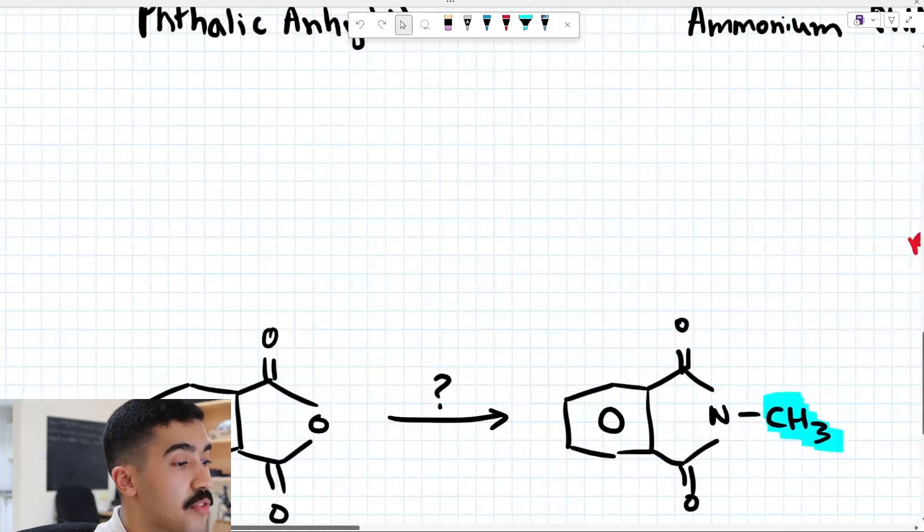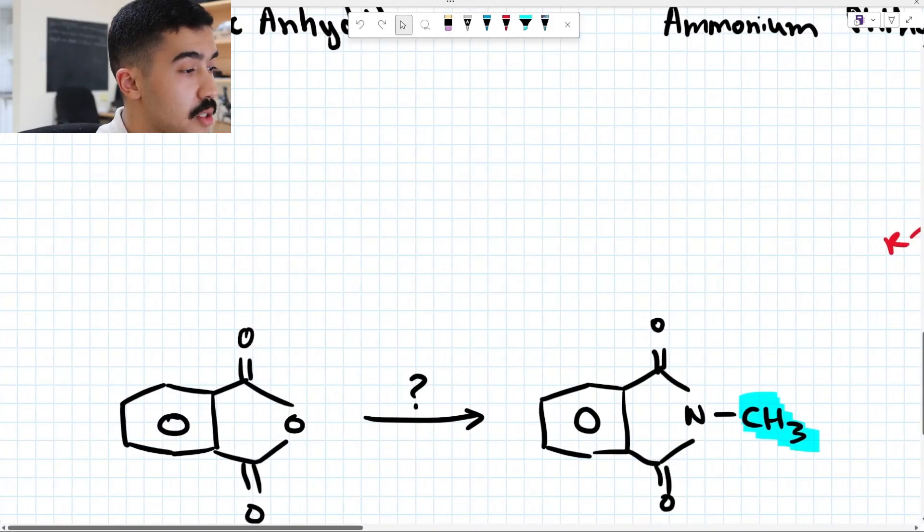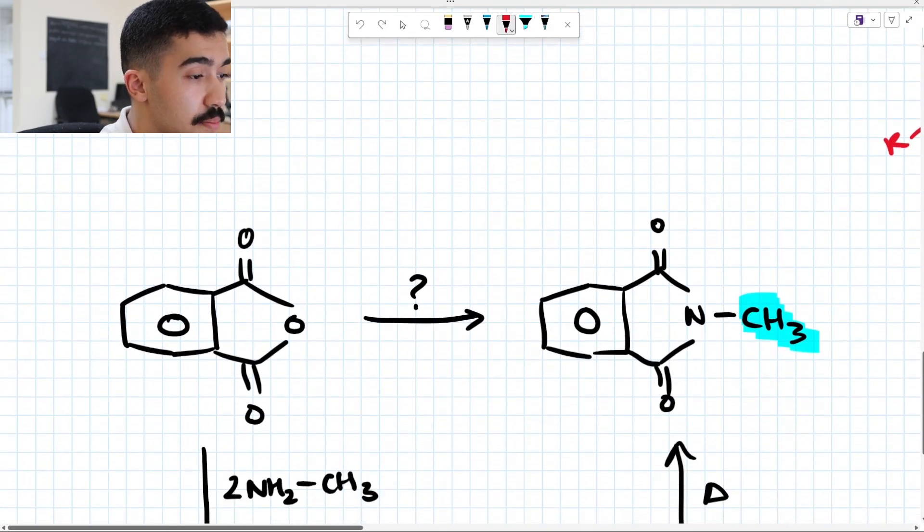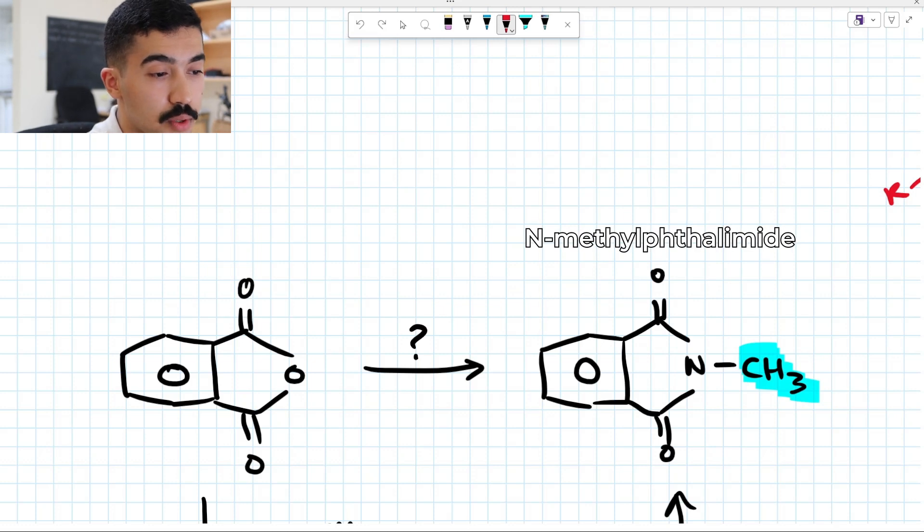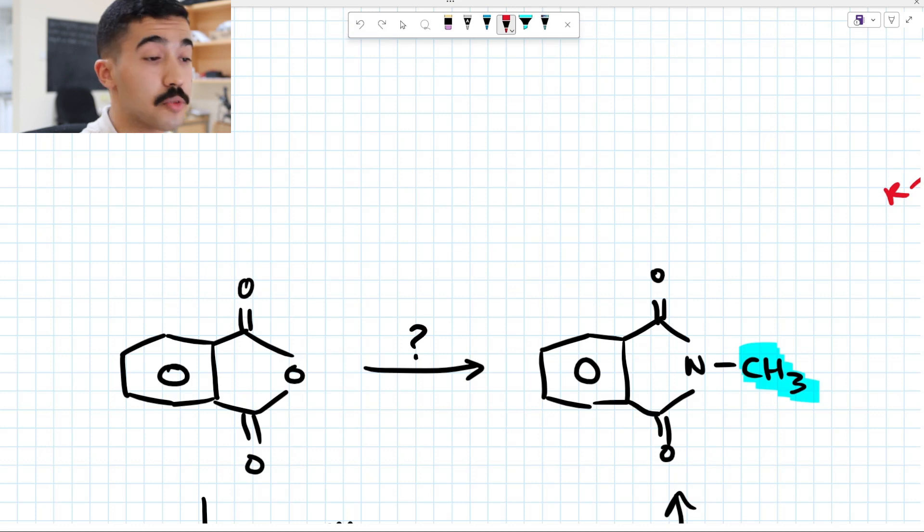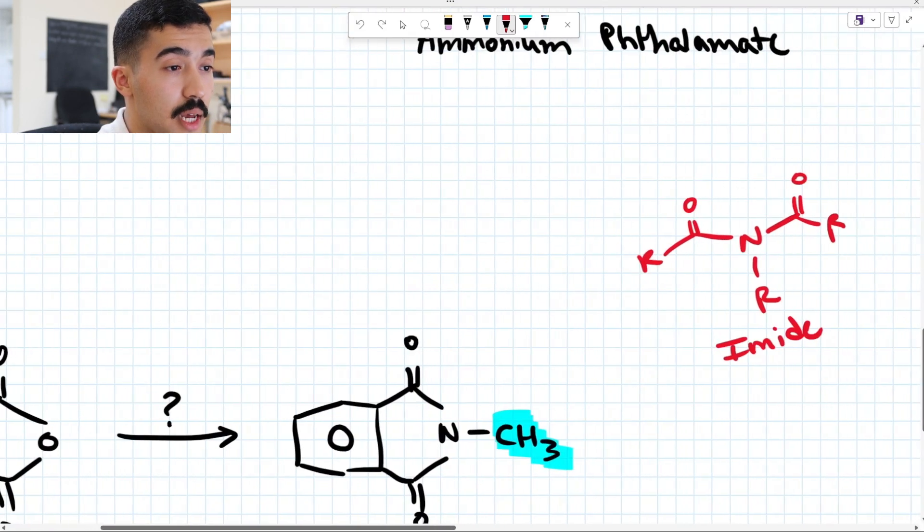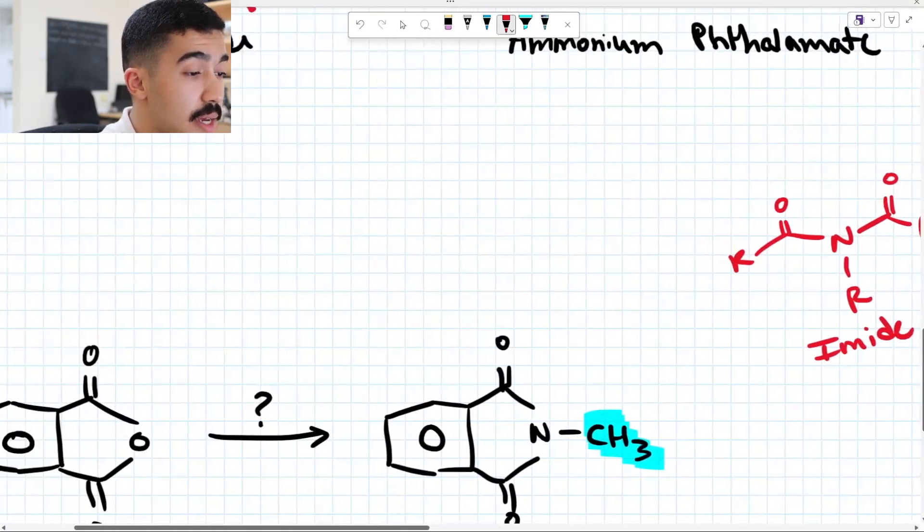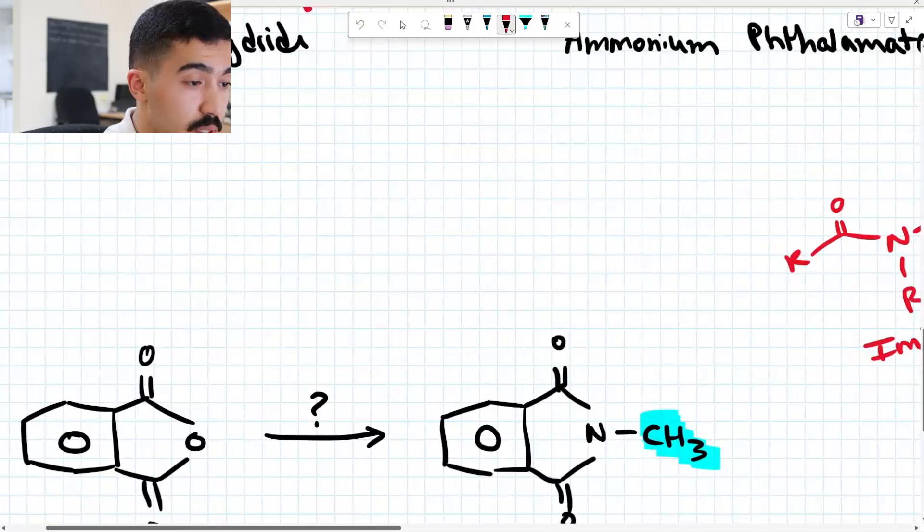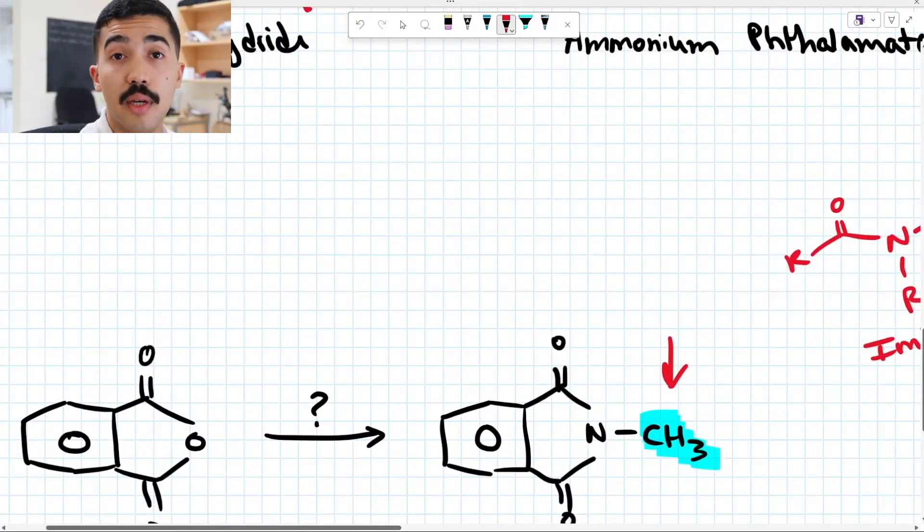Let's look at a specific example. And the question here is asking us to convert phthalic anhydride into this. I'm not sure what the name is. I should have probably figured out what the name was before filming this. But all we're doing is we're replacing what we had over here in the last step. Instead of a hydrogen over here, we want to add a methyl group. So CH3. How do we do this?